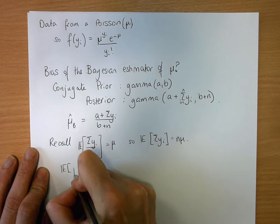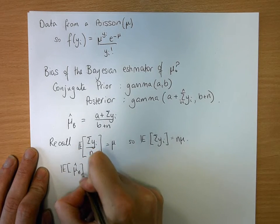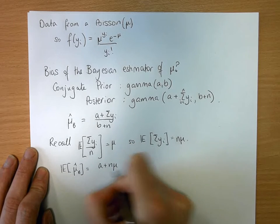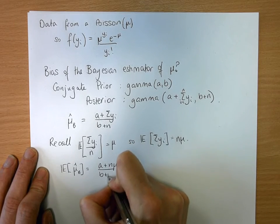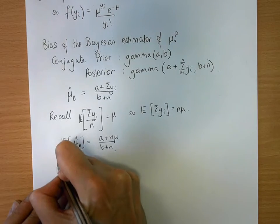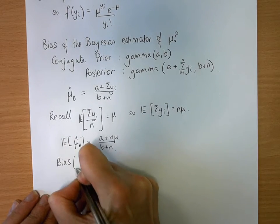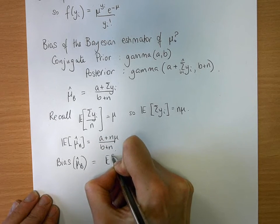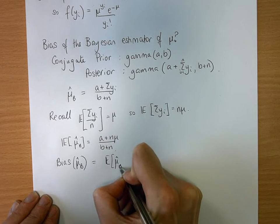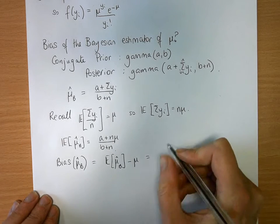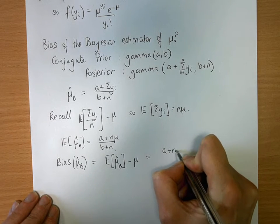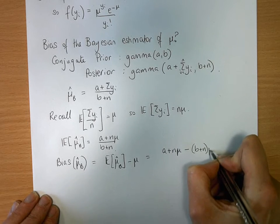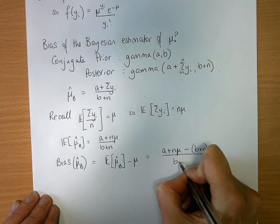As everything else here is a constant, the expected value of mu hat b is a plus n mu divided by b plus n. And the bias of mu hat b is the expected value of mu hat b minus mu, which is equal to a plus n mu minus b plus n times mu over b plus n.